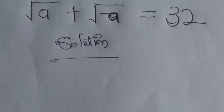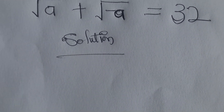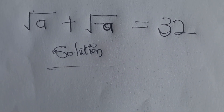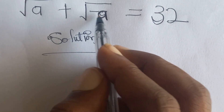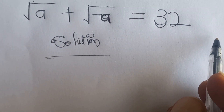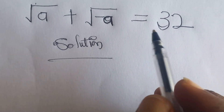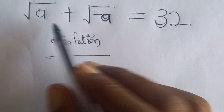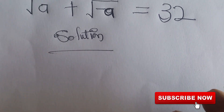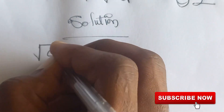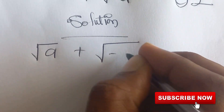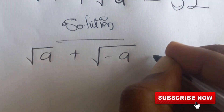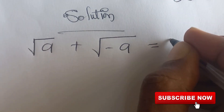Hello, welcome back guys. Today we are looking at square root of a plus square root of negative a is equal to 32. We are looking for the value of a, so square root of a plus square root of negative a is equal to 32.